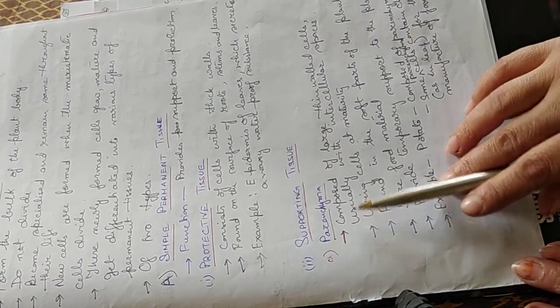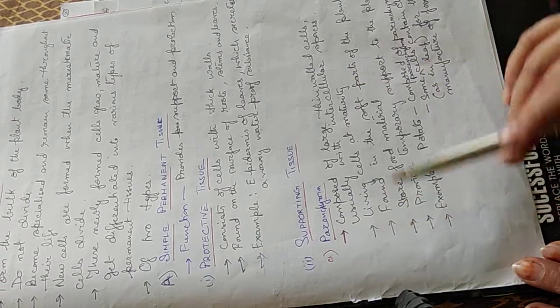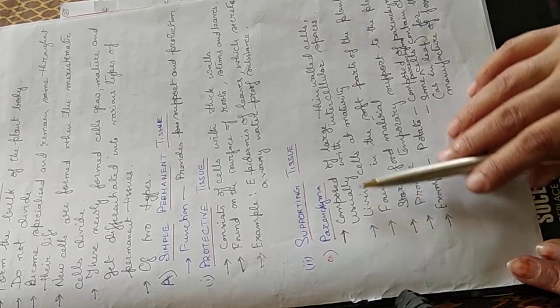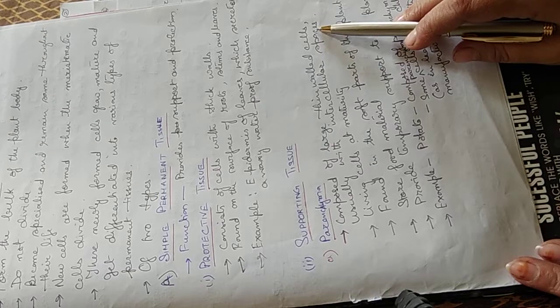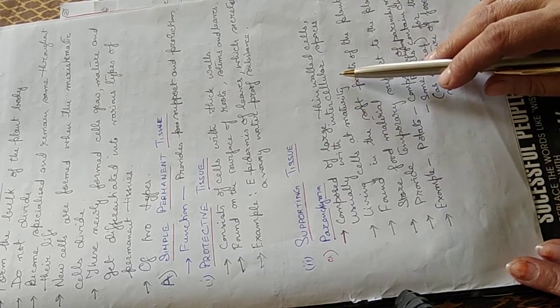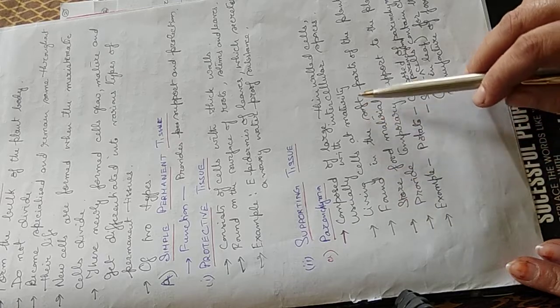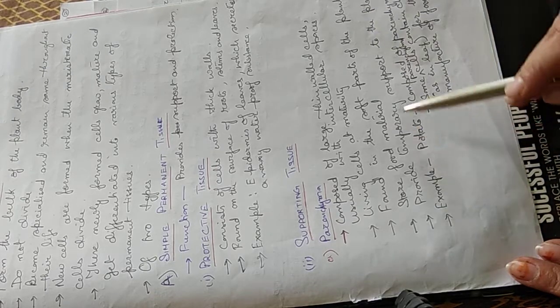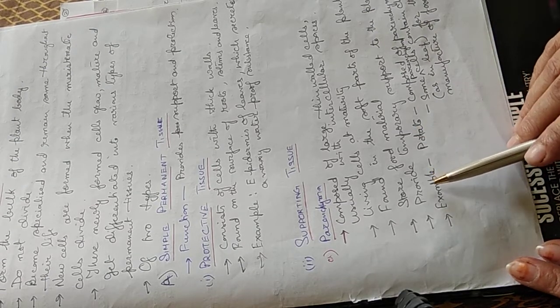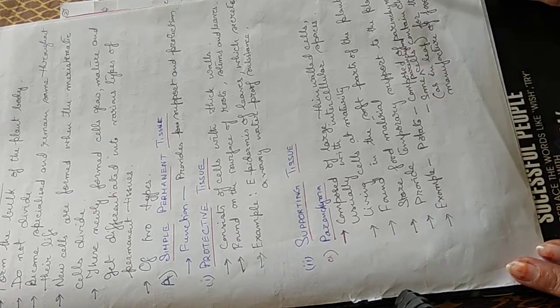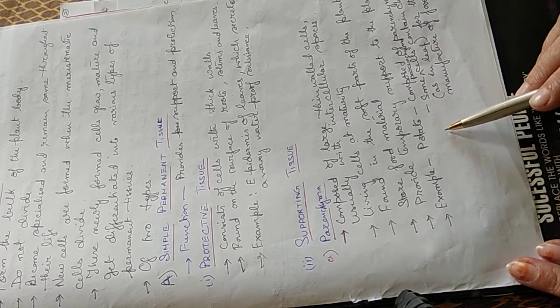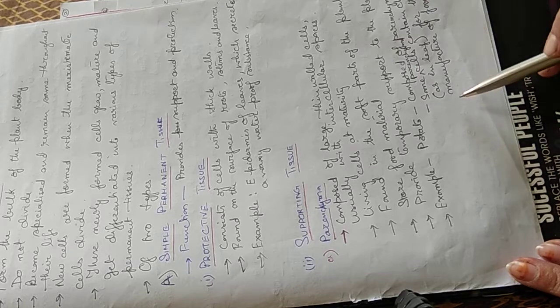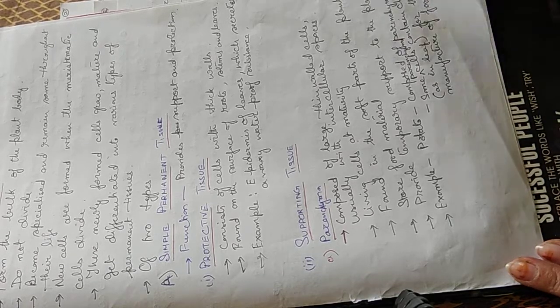The supporting tissue, parenchyma. It is composed of large, thin-walled cells, usually with intercellular spaces. The living cells at maturity and found in the soft parts of the plant. They store food material for the plant. They provide temporary support to the plant. Its example is potato, composed of parenchyma cells. Some parenchyma cells contain chlorophyll, as in the leaf for the manufacture of food.